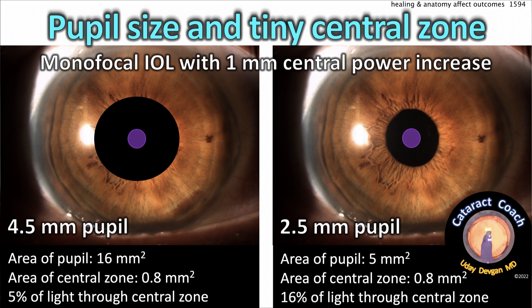Remember too that corneal aberrations — such as astigmatism, spherical aberration, and other higher-order aberration changes — can also affect the depth of focus by trading some image quality for a wider or larger range. All these measurements vary among patients and can significantly affect the post-operative visual results.